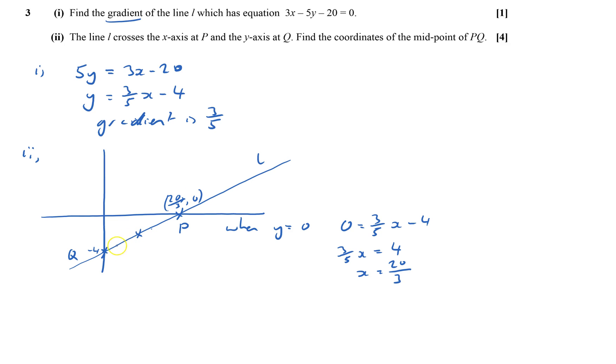And what I find here is the average of the x values, fairly obvious there, midpoint is average of that. So it's 0 here, 20 over 3 here. That would be 10 over 3. And it's gone from minus 4 up to 0. So that would be minus 2. So I would just put it straight in like that.